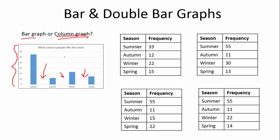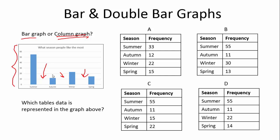Let's look at this example: what season do people like the most? Which table does this graph represent - A, B, C, or D? So we can see summer is at about 55, autumn is at about 12, winter is at about 22, and spring is at about 15, or maybe a bit less.